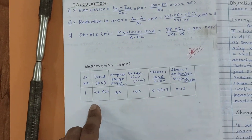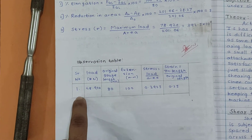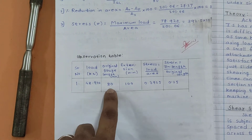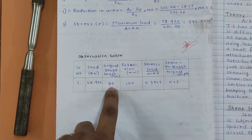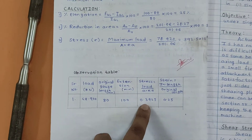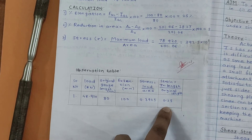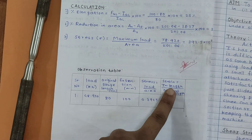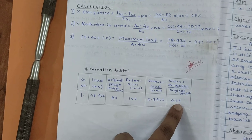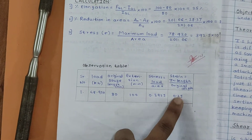These are the observation table values. First observation: load 48.920 kN, original gauge length 80 mm, extension to 100 mm, stress 0.923, and strain 0.20. Strain is the change in dimension upon its original dimension.